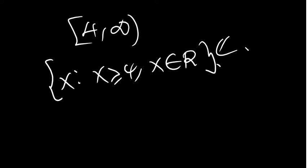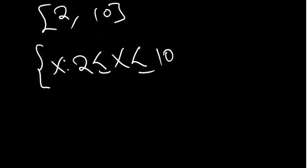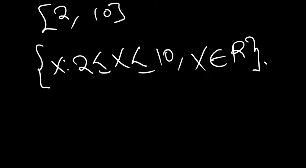Let's have two more examples. First: two included all the way to ten also included. In set builder notation: x such that 2 ≤ x ≤ 10, and x is a member of real numbers.